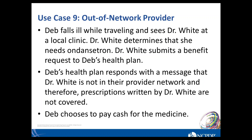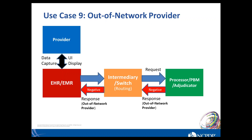Use case nine is out-of-network provider. Deb is traveling, falls ill, and sees Dr. White at a local clinic. He determines Ondansetron is needed and submits a benefit request to Deb's health plan. The plan responds that Dr. White is not in their provider network, and any prescriptions written by Dr. White are not covered. Because Deb is traveling and feeling miserable, she chooses to pay cash for that medication. The only information returned is that this is an out-of-network provider — no financial information or alternatives are included.